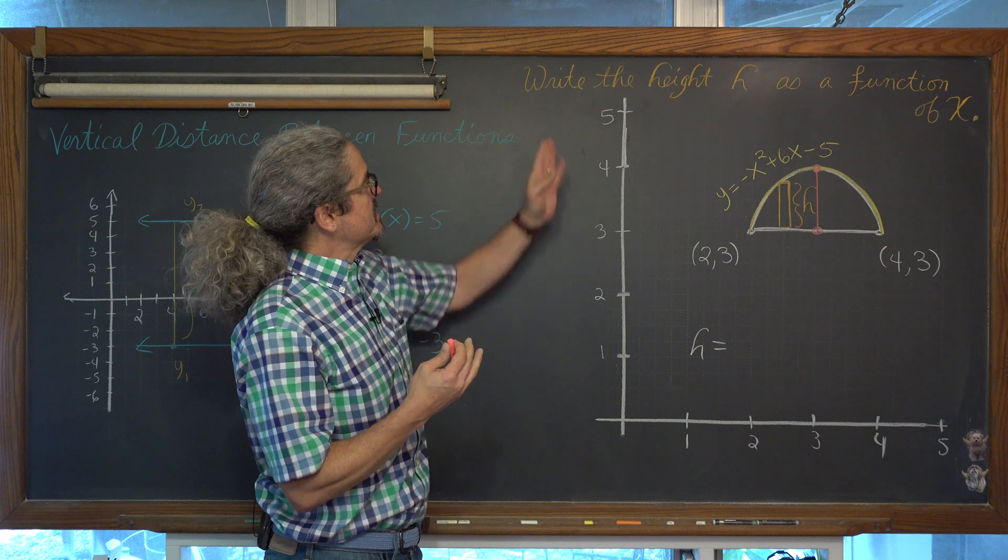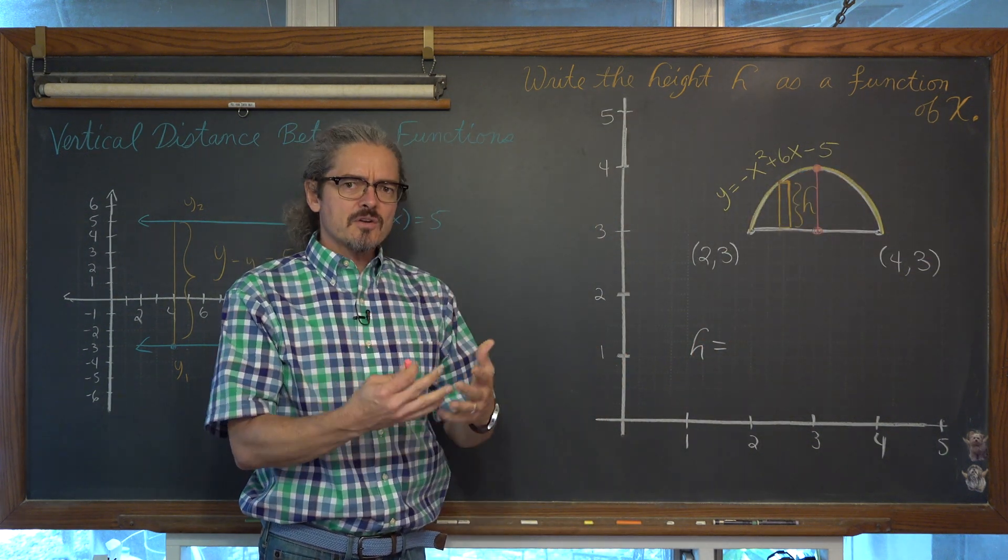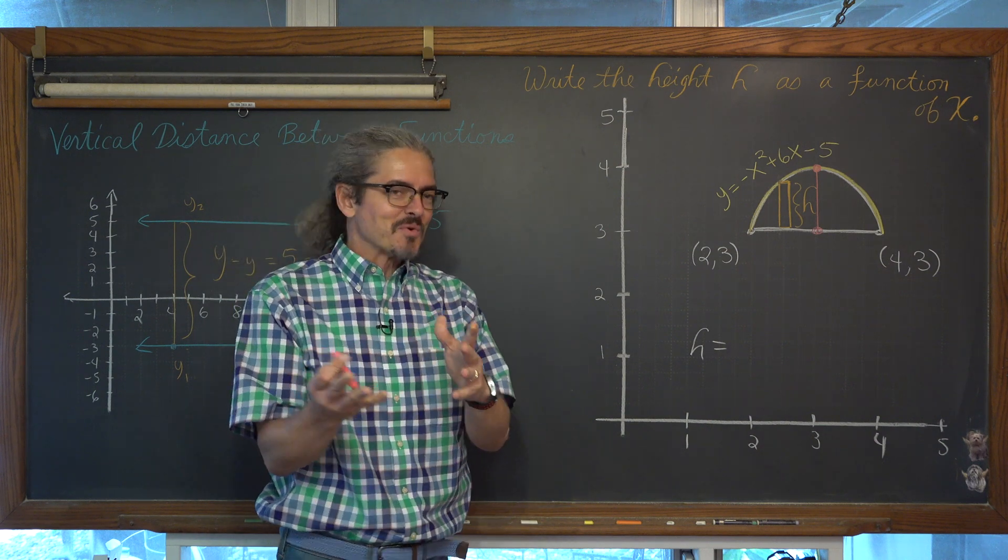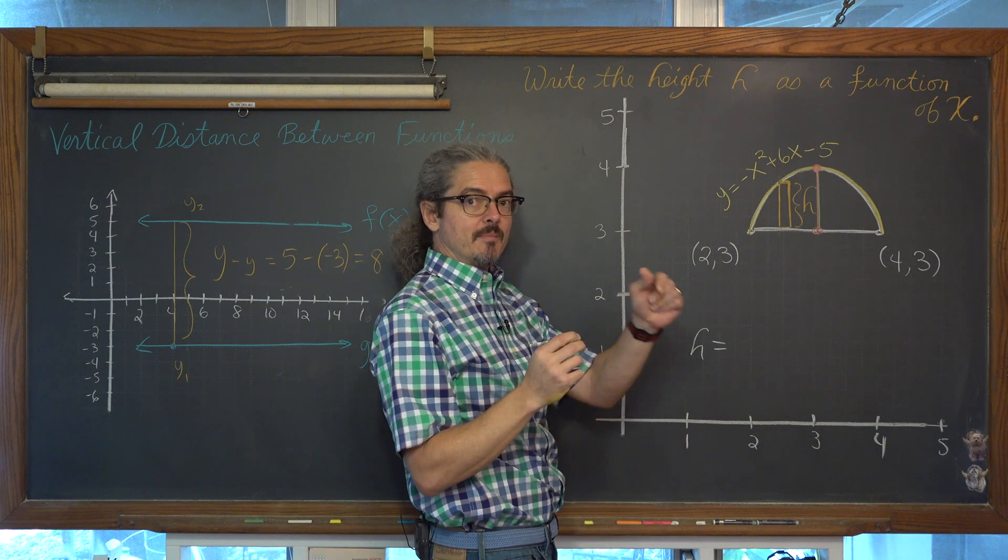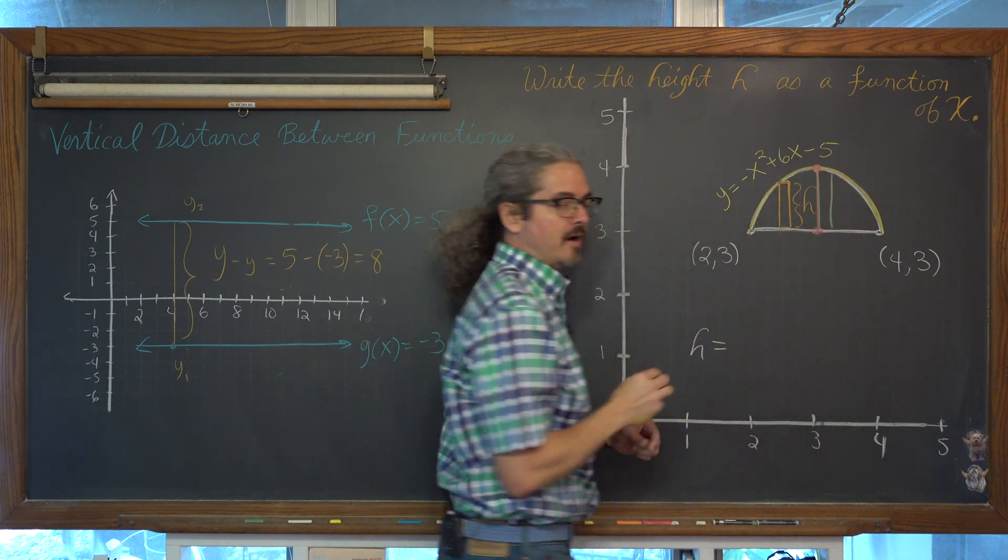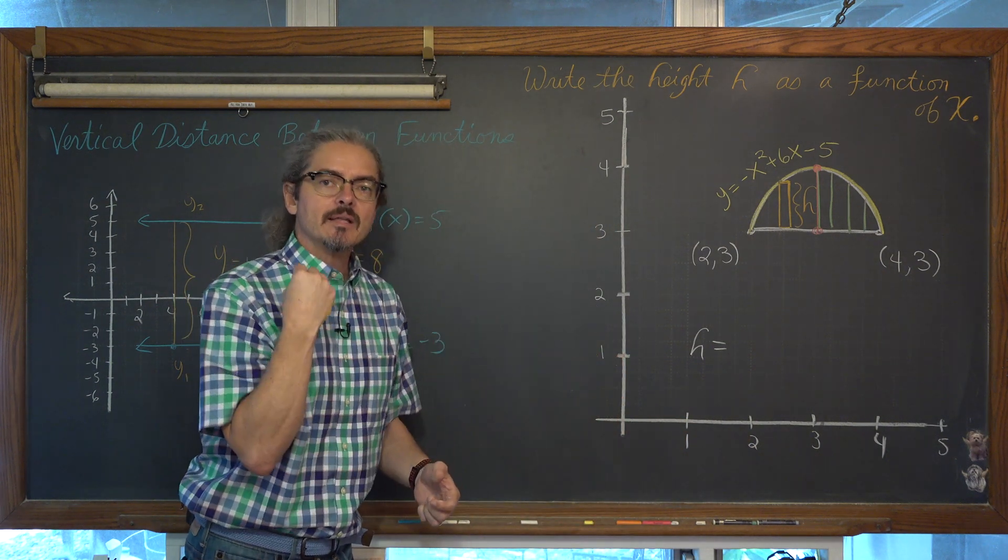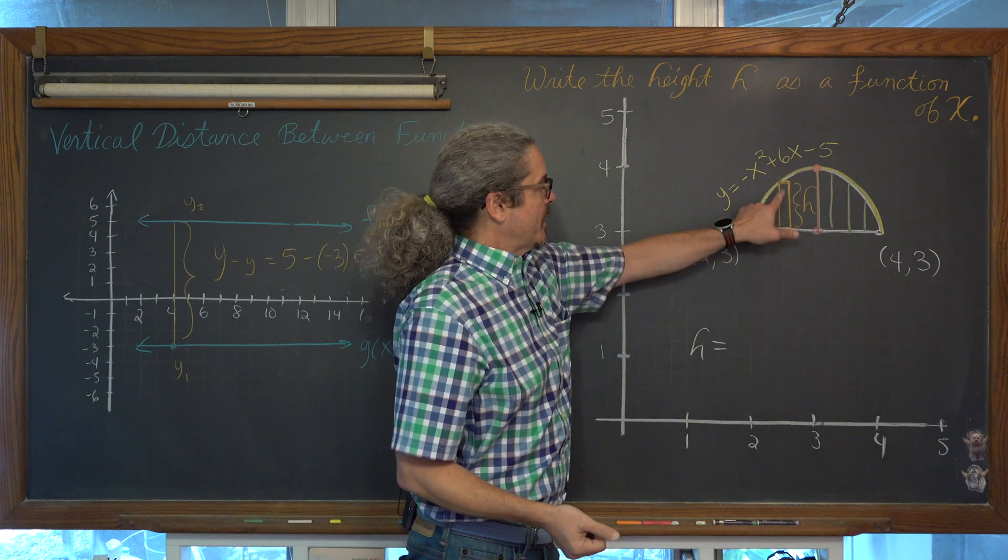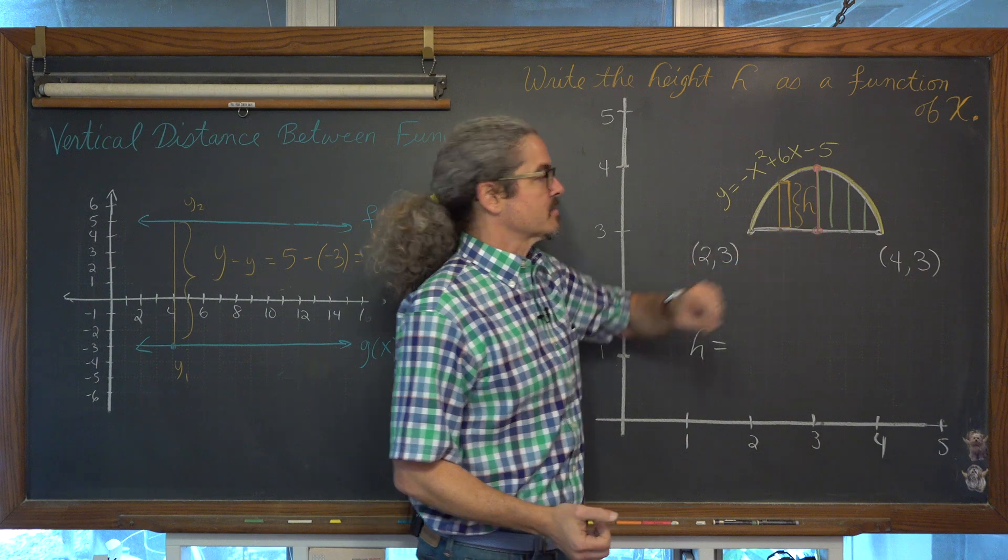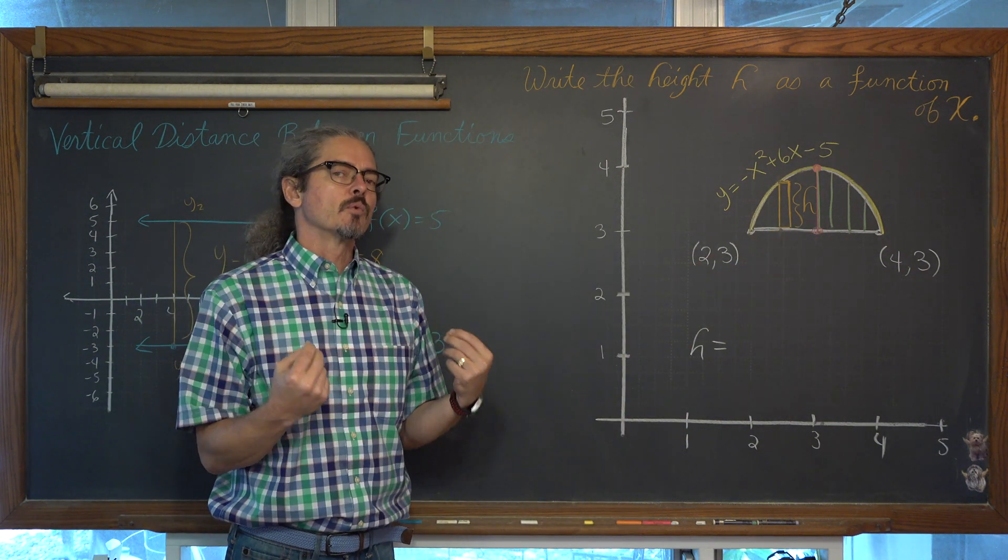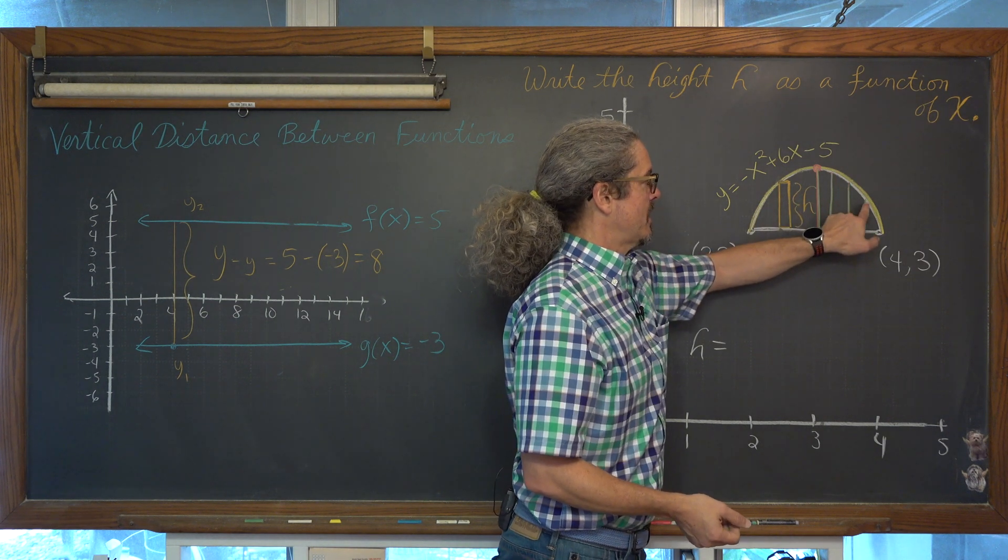But when it says write the height, the distance between the parabola and the line as a function of x, what that means is I want a function, I want an equation. If you plug in the x value of 3 and get a distance, and at the same time, at the very next second, I plug in a value of 3.25 and I get a distance, a value of 3.5 and I get a distance. I want a function, I want something that I can just plug in a value of x and out spits a value of y, or a distance between the parabola and the line. So we're not going to be able to say it's just 5 minus negative 3 and it's 8, or it's 4 minus 3 and it's 1. I want to do that mental arithmetic in terms of function notation, in terms of variables. And that height is variable. That red line is longer than that green line, which is longer than that green line, and so on and so on.